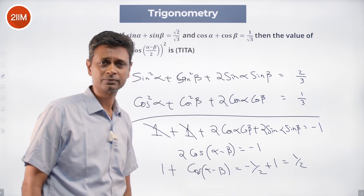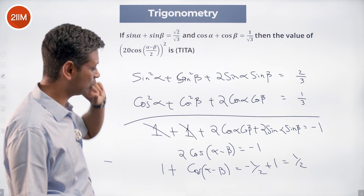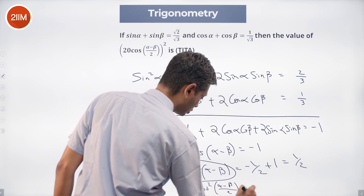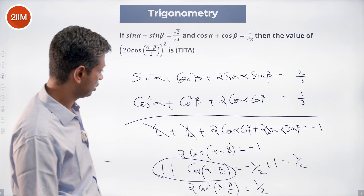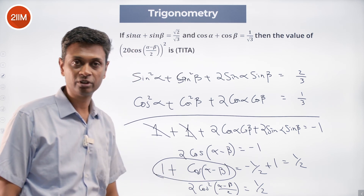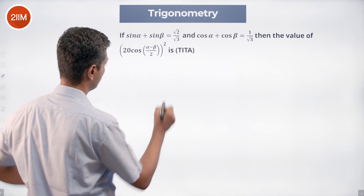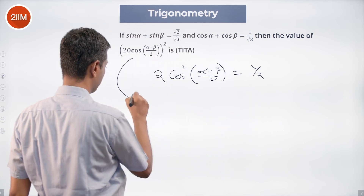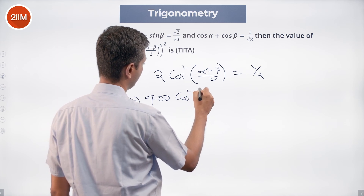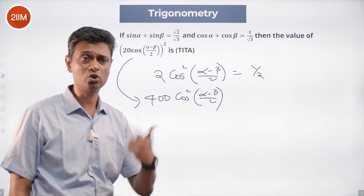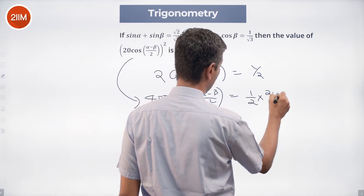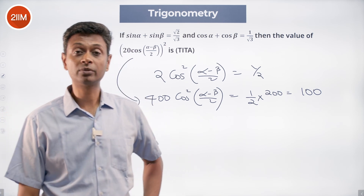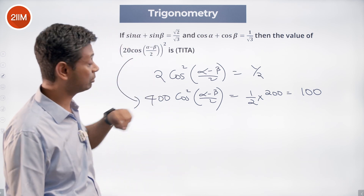So 1 + cos(α-β) = 2cos²((α-β)/2) = 1/2. What we need to find is 400·cos²((α-β)/2). Since 2cos²((α-β)/2) = 1/2, we multiply by 200: 400·cos²((α-β)/2) = 100. Beautiful question — the key insight is that 20·cos((α-β)/2) whole square equals half times 200.